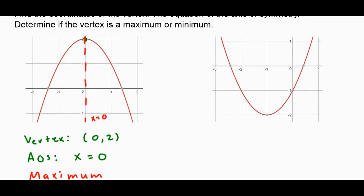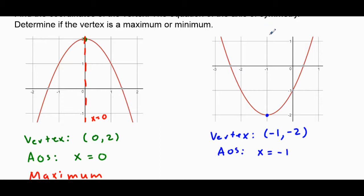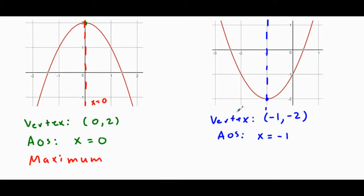Now let's look at the other example. I'm going to look for my vertex — the lowest point is right there. So my vertex is the point (−1, −2): I go left 1, down 2. My axis of symmetry is therefore the vertical line X equals −1. I could drop a vertical line through it and it would cut it in half. Looking at this parabola, the vertex is at the very bottom, meaning this is a minimum.